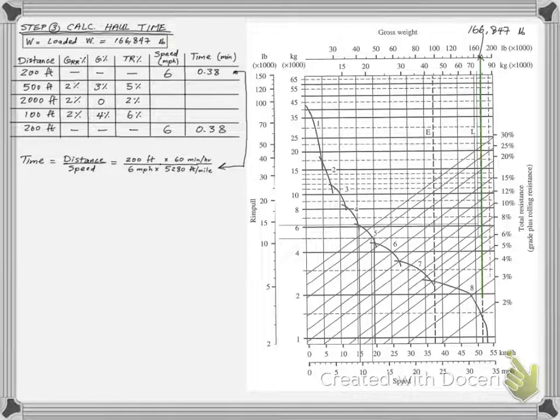We are now ready to use the performance charts to get the speeds of the other segments. As all resistances are positive, we don't need the retarder chart here, just the rimple chart. We start using it by marking the scraper loaded weight on the top axis and drawing a vertical line. For the second segment, we mark 5% total resistance, intersect with the weight line, and draw a line towards the performance curves.